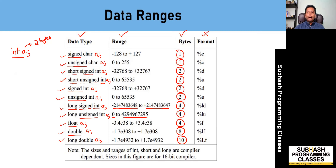I hope you have understood what data ranges mean and how to identify the range of values that can be stored in variables of various data types using the qualifiers short, long, signed, and unsigned. In the upcoming lesson, I will be discussing how to print these values using the built-in function printf. If you liked this lesson, please like the video, subscribe to the channel, and click the bell icon to receive updates. Meet you in the next lesson — take care, bye-bye!